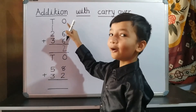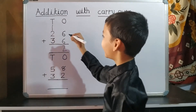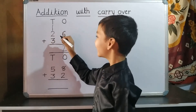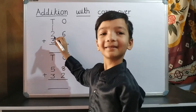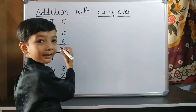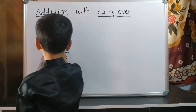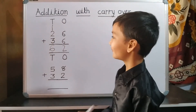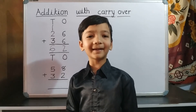Now we do addition of ten's place. 1 plus 2 equals 3. 3 plus 3 equals 6. So we write 6 on ten's place. 62 is our answer.